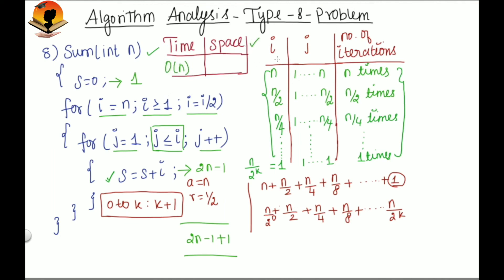Now what is the space complexity? Here we are having variables s, i and j. Each one takes 1 unit of memory. And the total memory unit is 3 which is constant. So the space complexity for this problem is order of 1.